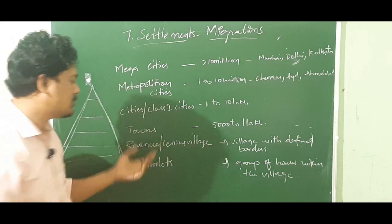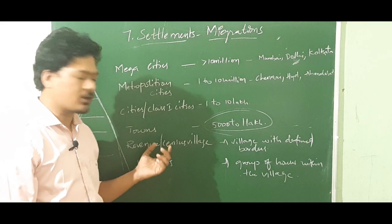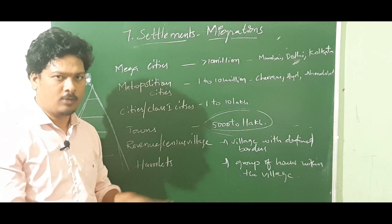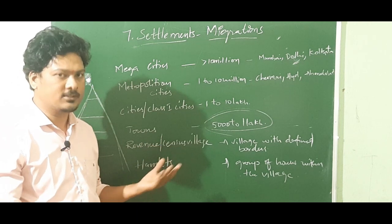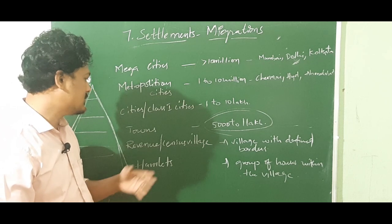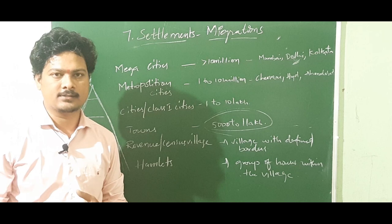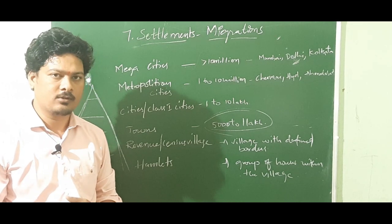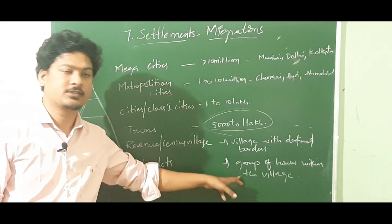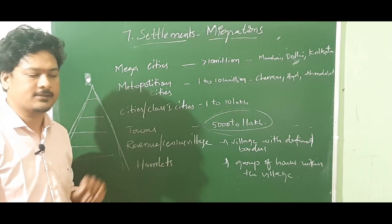Class 1 cities have a population of 1 lakh to 10 lakh. Towns have a population of 5,000 to 1 lakh. A revenue or census village is a village with defined borders. Hamlets — like tandas — are smaller clusters where you can hardly find 30 to 40 houses or families living together. A group of houses within the village is called a hamlet.